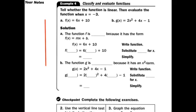Example 4. Tell whether the function is linear, then evaluate the function when x equals -3. Well, let's take a look. Does this look like a line? Yeah. It's to the first power, so it's linear. x is to the first power. Does this look like a line? No. That's going to be a curve. That's quadratic. So that's a problem. So on a, the function is linear.